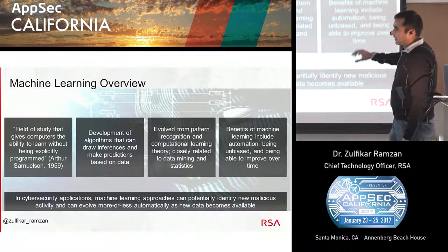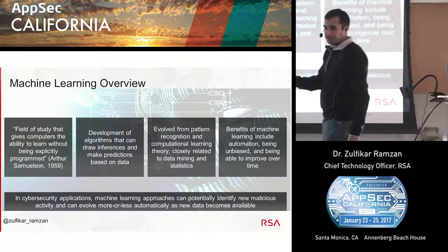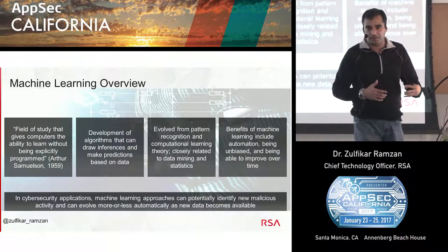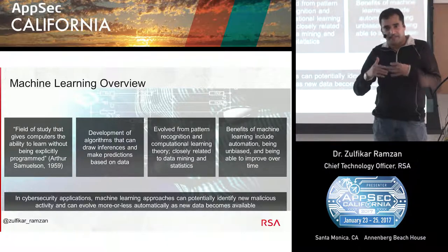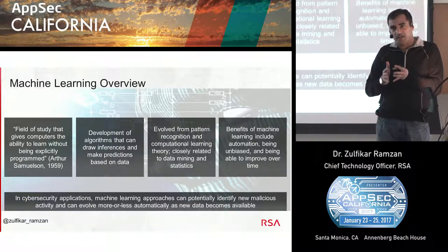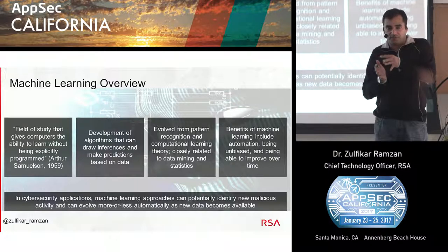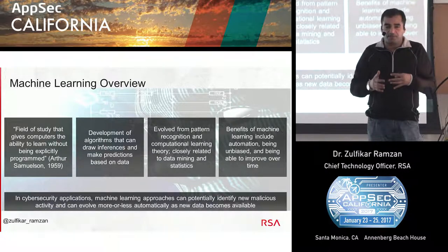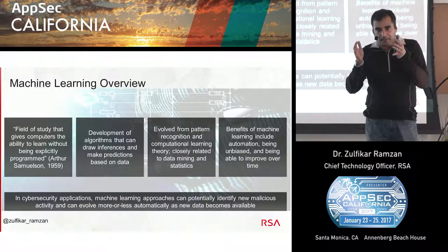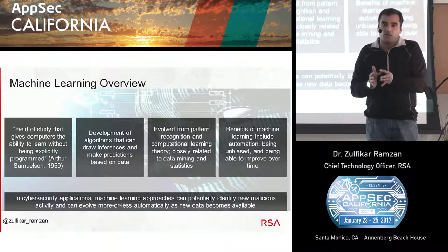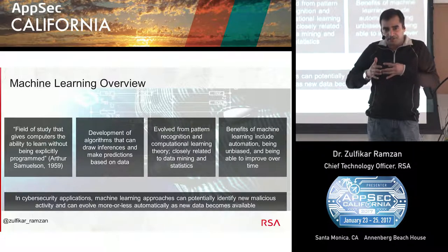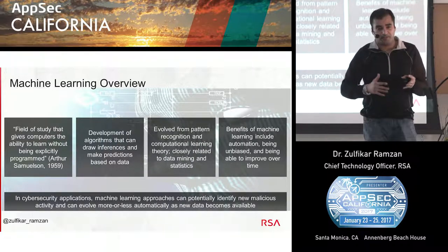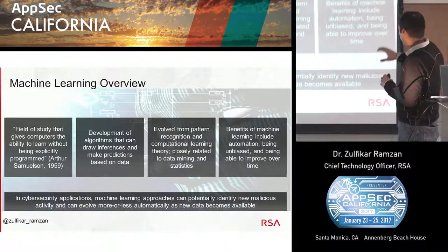Machine learning has had a rich history, evolved from areas like computational learning theory, pattern recognition, and data science. Over time we've seen subtle differences in terminology and nomenclature, but the ideas are becoming much more mainstream. The goal for practitioners now is how do you actually take some of these ideas from the lab environment and make them work in real life?